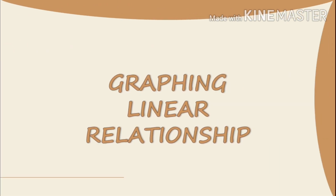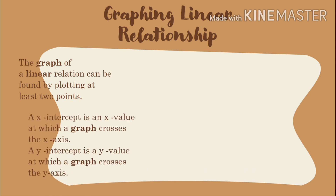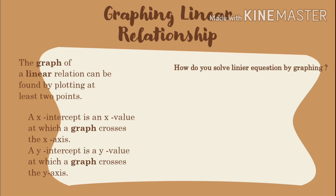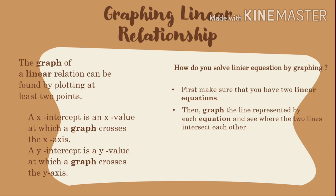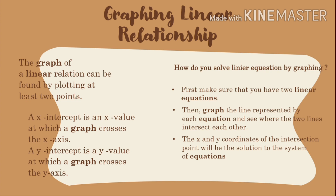Graphing Linear Relationship. The graph of a linear relationship can be found by plotting at least two points. An x-intercept is an x value at which a graph crosses the x-axis. How do you solve a linear equation by graphing? First, make sure that you have two linear equations. Then, graph the linear represented by each equation and see where the two lines intersect each other. The x and y coordinates of the intersection point will be the solution to the system of equations.